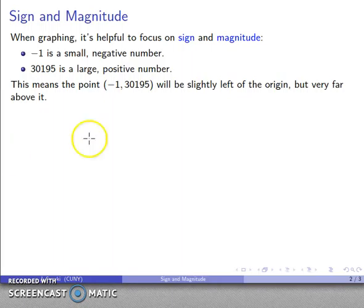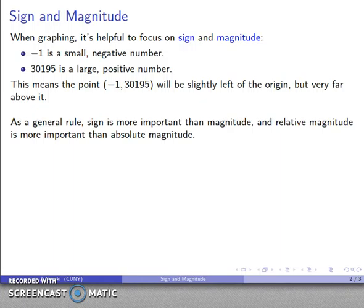But the other way I can look at it is negative 1, well, slightly to the left of the origin, large positive number, way above the origin, I'm up here someplace. As a general rule, sign is more important than magnitude, and relative magnitude is more important than the absolute magnitude. We'll see what that means in a second.